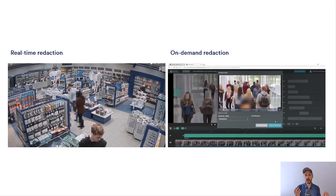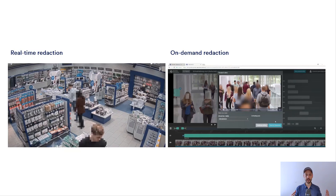These two different types also define the technology you need in order to do this. For real-time redaction, it's typically motion detection that you use, because motion detection is so robust that you can be pretty sure that everybody in the video is really redacted in real-time as it happens.